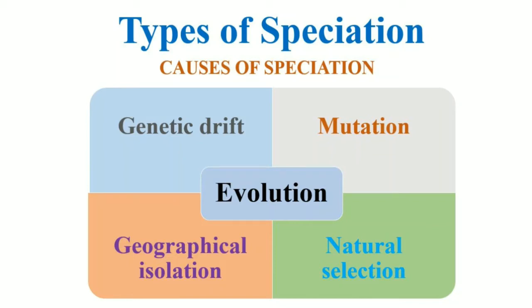In this video, we will discuss speciation and its types. Speciation is an evolutionary process in which from one parent species, two distinct species arise.